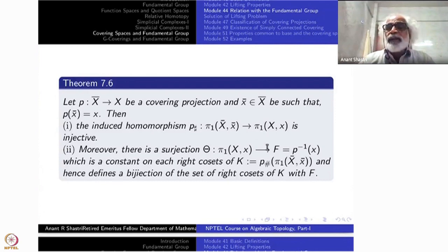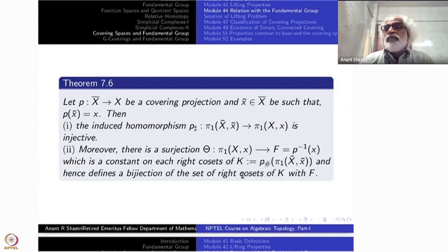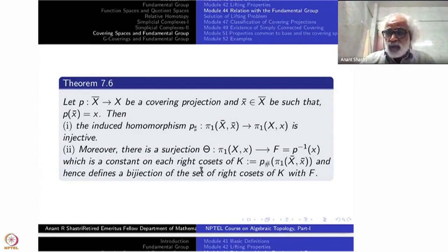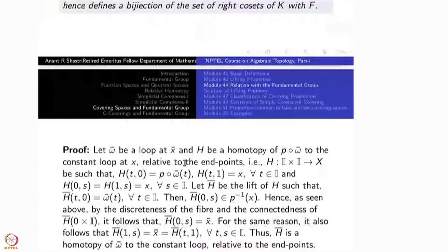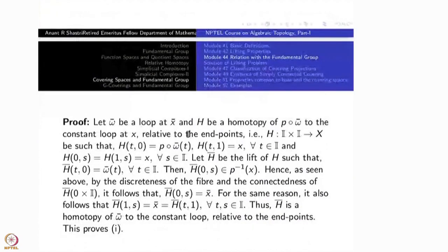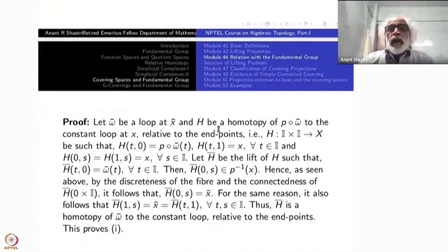Moreover, if you take the right cosets of the subgroup, they correspond in a nice fashion to the points of the fiber. Now for the proof: let ω̄ be a loop at x̄. I am proving injectivity. Let H be a homotopy of p composed with ω̄ to a constant loop, which just means that p_check of this element in the fundamental group is the trivial element.